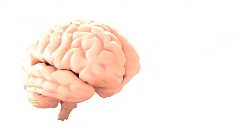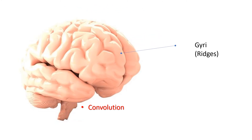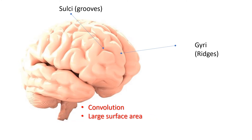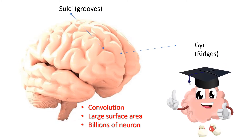The human brain contains numerous convolutions. Convolutions are the twists or coils present on the cortex of the brain. The upper part of the convolutions are called gyri or ridges, and the depressions are called sulci or grooves. Convolutions increase the surface area of the brain, which allows accommodation of billions of neurons. It is believed that more convolutions a person has, the smarter they are.